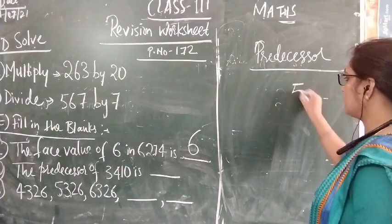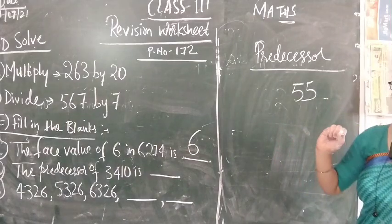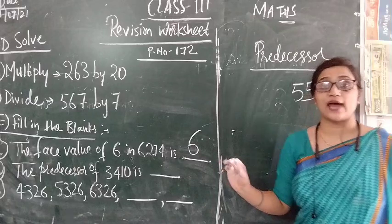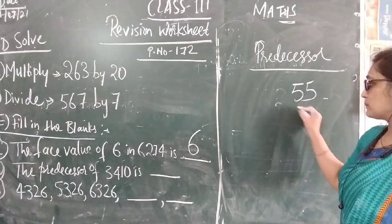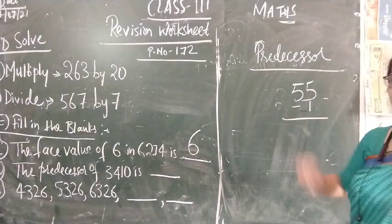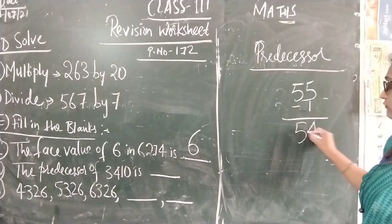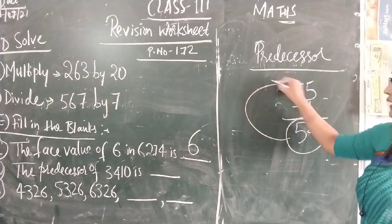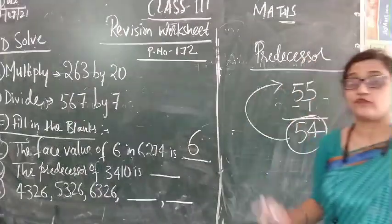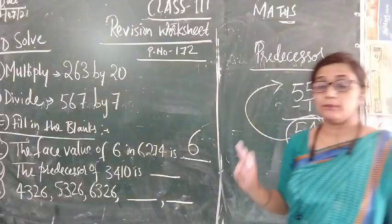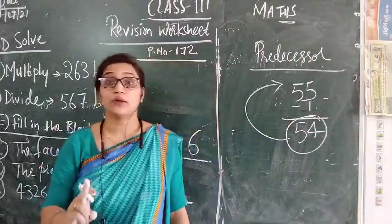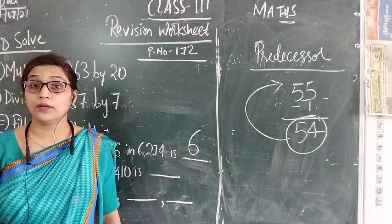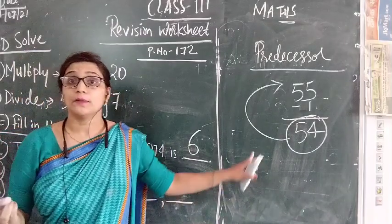For example, 55. What is the predecessor of 55? We know that if we subtract 1 from this 55, we will get 54. So this 54 is the predecessor of 55. So if we subtract 1 from the given number, that number is called its predecessor.